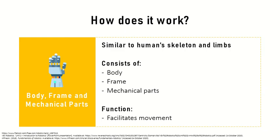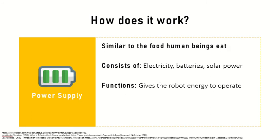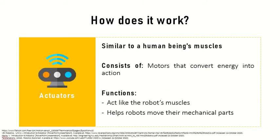Firstly, just like humans have a skeleton and limbs, robots are made out of a body or frame and have mechanical parts like grippers, arms and legs to facilitate movement. Robots are also equipped with a power supply such as batteries, which give them energy to operate. Thirdly, they have actuators, which are motors that act like the robot's muscles and help convert this energy into action so the robot can move its mechanical parts.